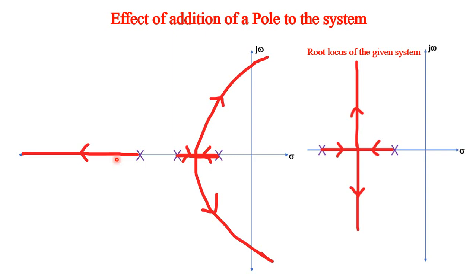Totally, there are three root locus segments because there are three open loop poles. Root locus starting from this pole and root locus starting from this pole - they meet and break away. One goes like this, another goes like this. Both become complex and cut the j-omega axis. After a particular gain, both become unstable - they travel in the right half S-plane - while the third closed loop pole goes like this. So the system which was originally stable has become unstable. Therefore, when you add a pole to the system, stability is affected.